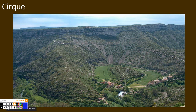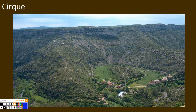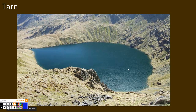When a glacier grows within a mountain, it weathers the rock, breaking it down, and erodes it to the side of the bowl, creating a large bowl in the mountain due to glacial weathering and erosion. This bowl-shaped formation is called a cirque. A tarn forms simply when a cirque fills in with water.